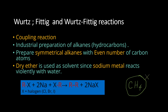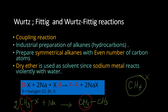Using Wurtz reaction with methyl halide and sodium metal, two methyl halide molecules react to form ethane. So CH3X + CH3X with sodium gives CH3-CH3, which is ethane. The simplest hydrocarbon made by Wurtz reaction is ethane. Note that methane itself cannot be formed by Wurtz reaction.